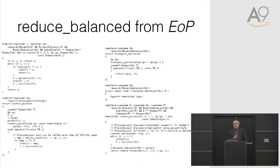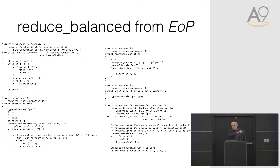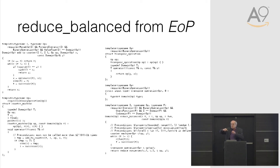I can't resist throwing in a little code from Elements of Programming. This is really the better way to do balanced reduction. According to Don Knuth, John McCarthy came up with this idea — maybe he did — but Alex wrote the code, and it's classic Alex code. It's walking along a sequence of elements bottom-up, pairing each even element with the next odd one, and then saving them in an interesting binary counter until it's time to combine them with their appropriate matching element.